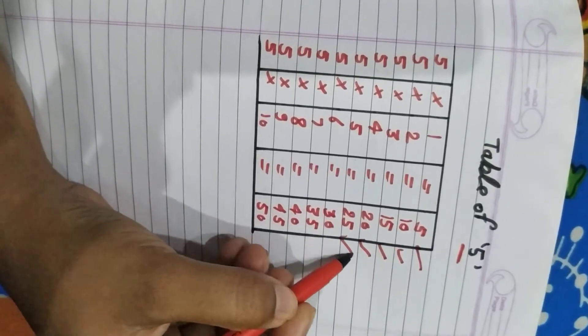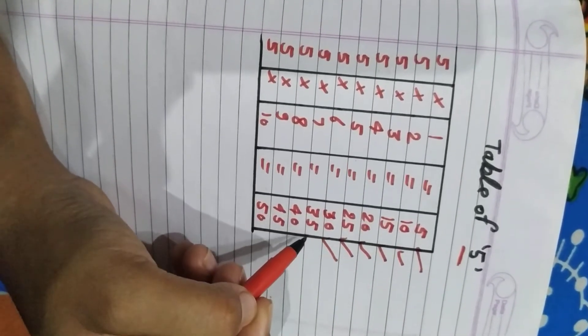Five five ja twenty five. Five six ja thirty. Five seven ja thirty five.